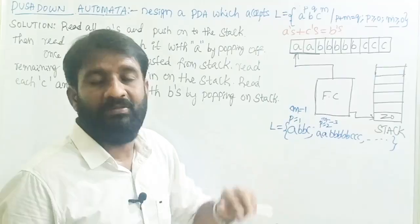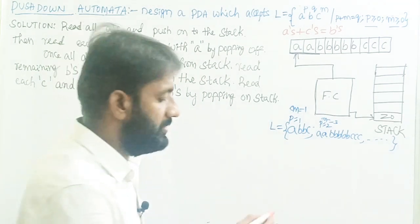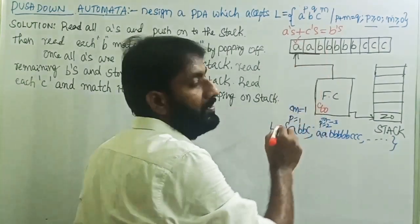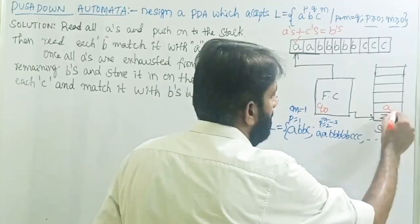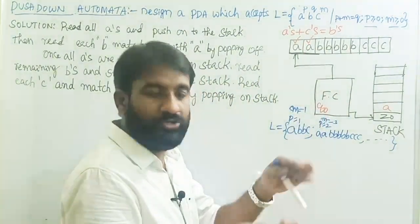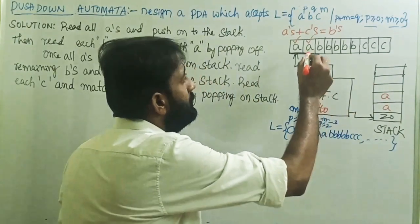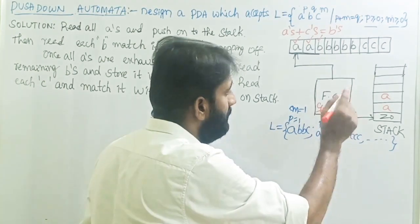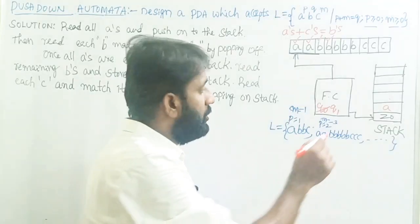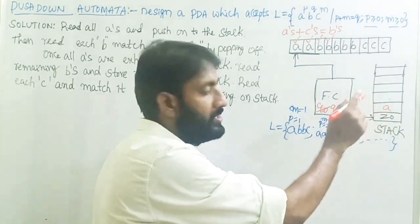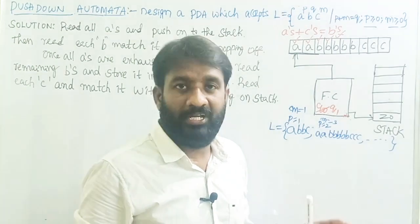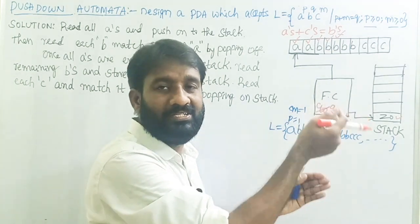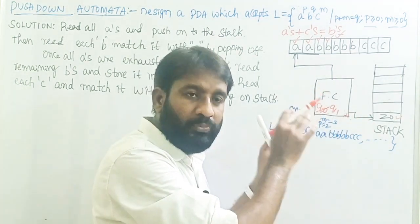Let me explain this solution. By analyzing this pushdown automata, the first state is Q0. Observe that the first input symbol is A — read A and push onto the stack. Next input symbol is A — read A and push onto the stack. Then the next input symbol is B and the top of the stack is A, so change state from Q0 to Q1 by doing the pop operation. Next input symbol is B, top of stack is A, so do the pop operation without changing the state.